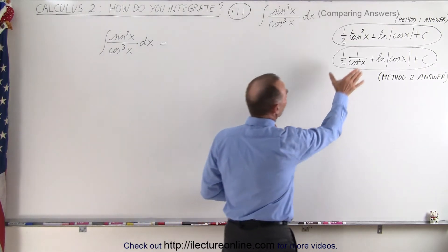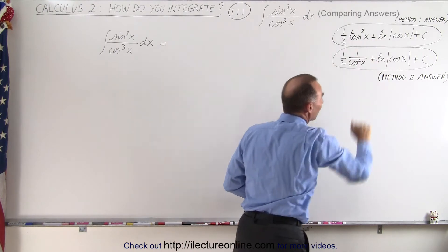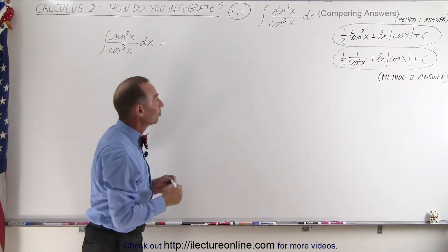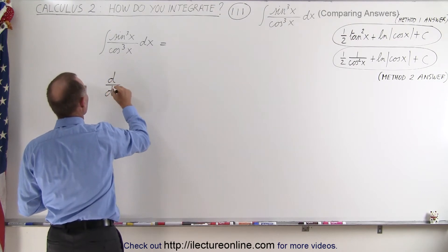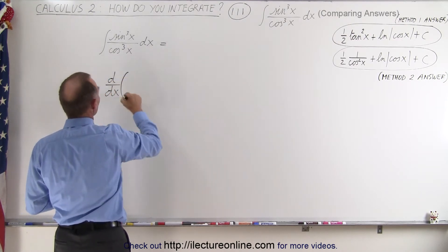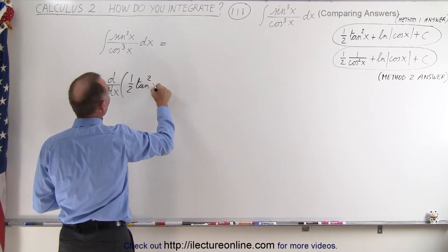We're going to take only the derivative of this part of the first answer and this part of the second answer since the rest of it is identical. So we're going to take the d dx of the first part of the answer which is one half times the tangent squared of x.